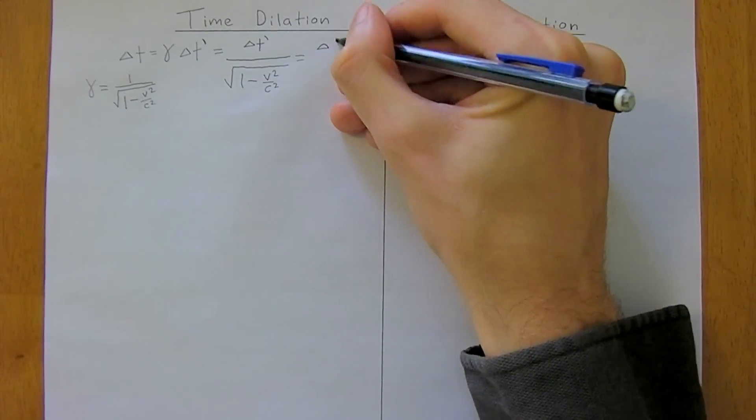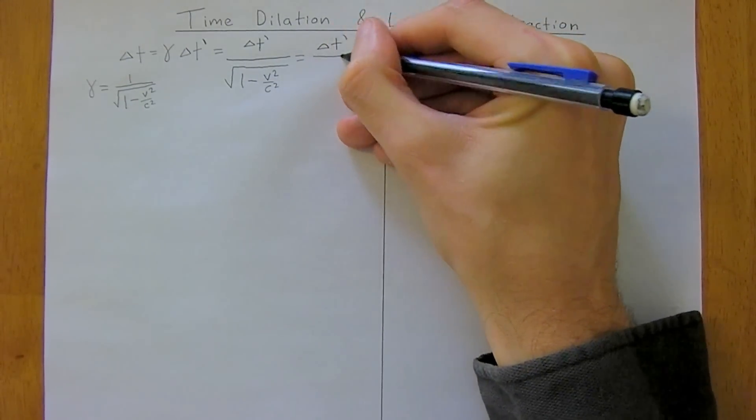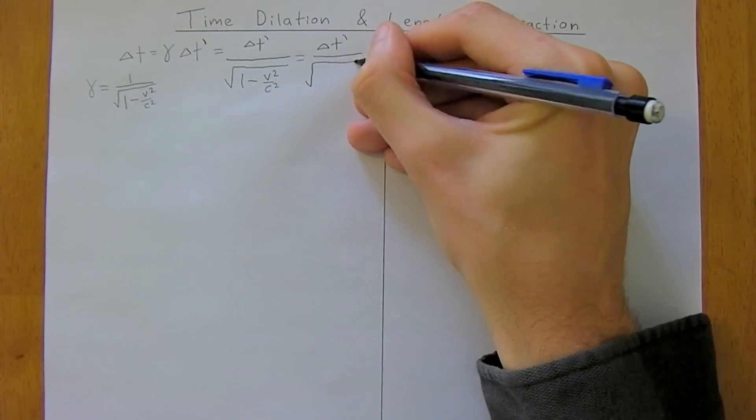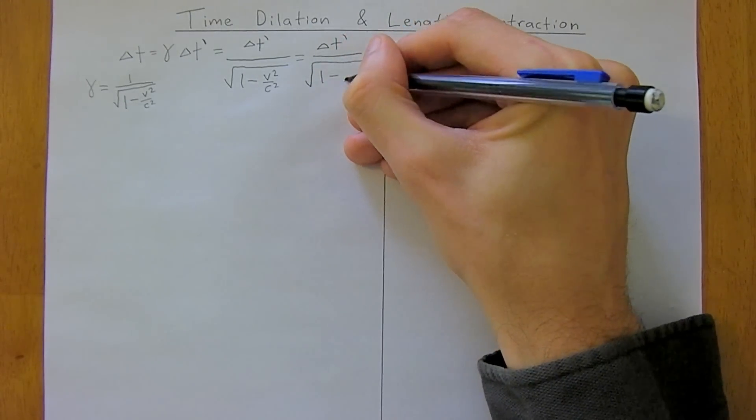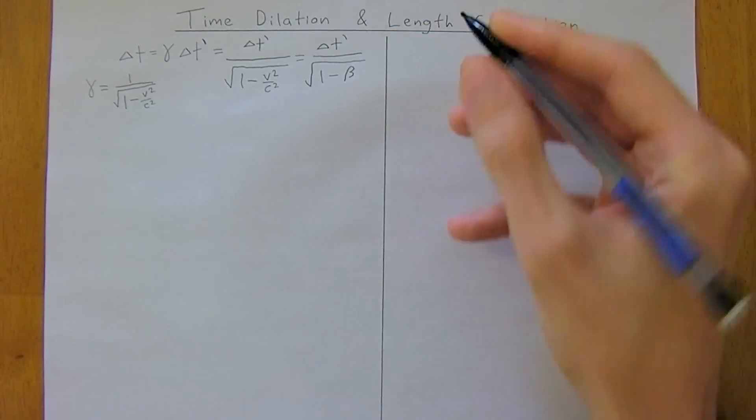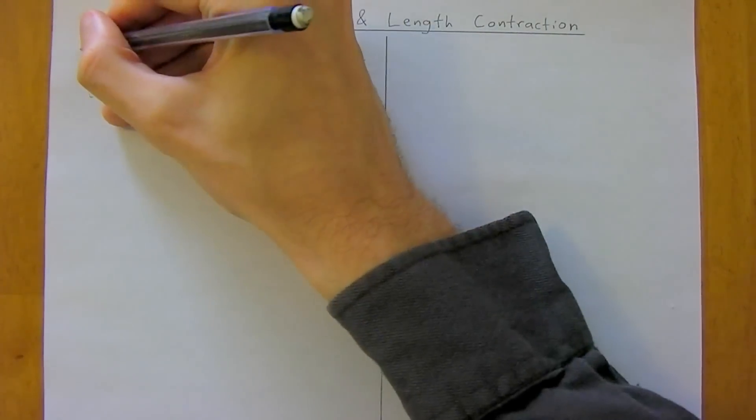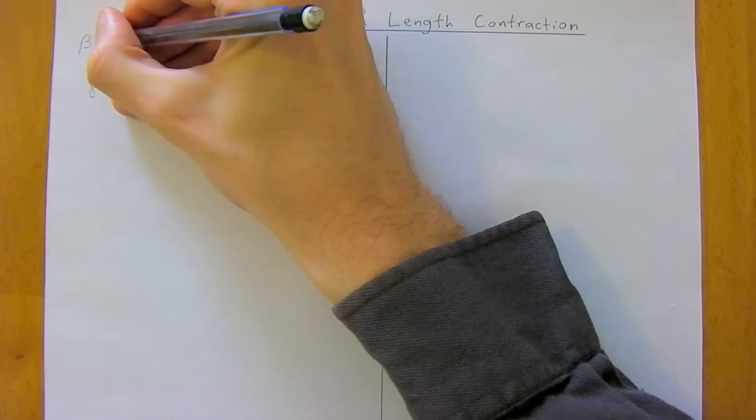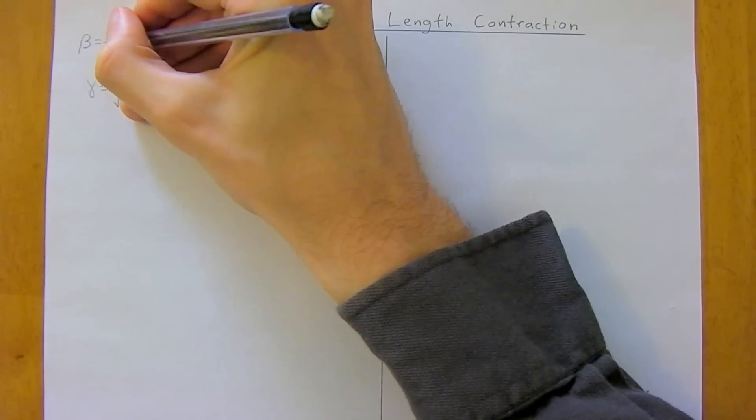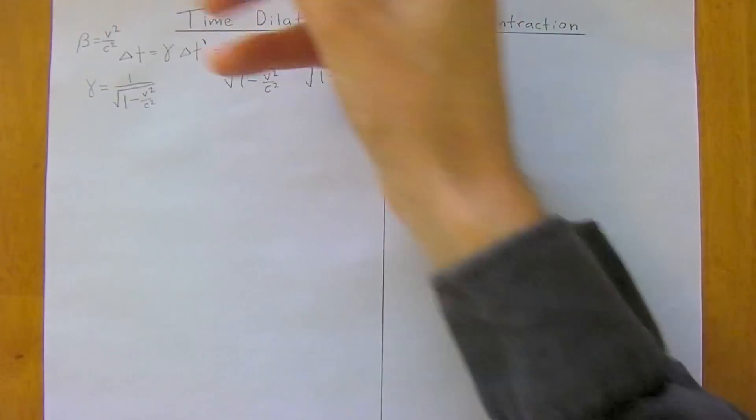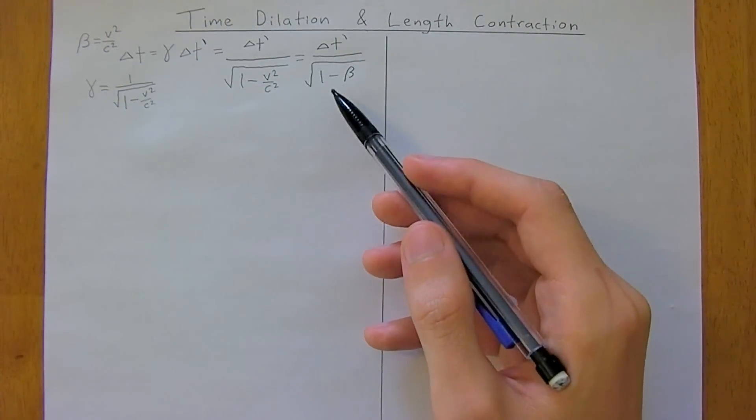this is also sometimes represented as t naught divided by the square root of 1 minus beta. And beta is just equal to v squared over c squared. So that's all the different forms you'd see it in.